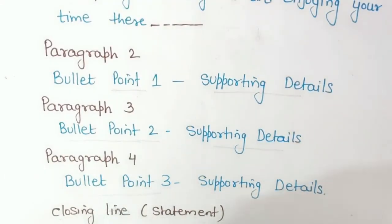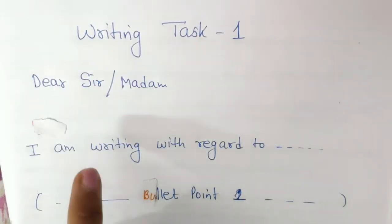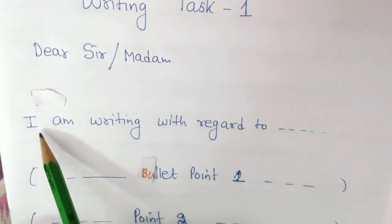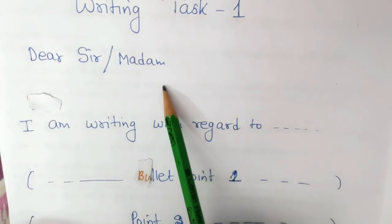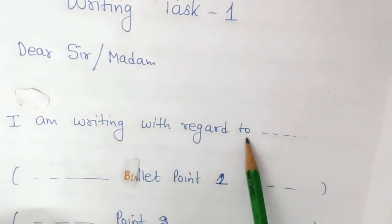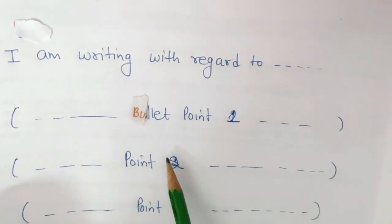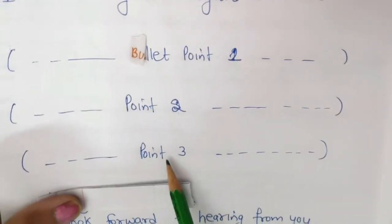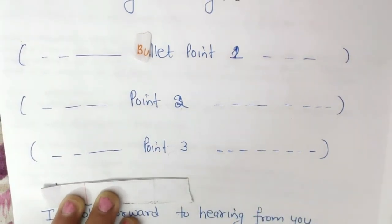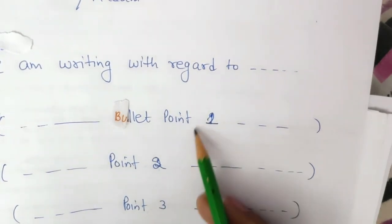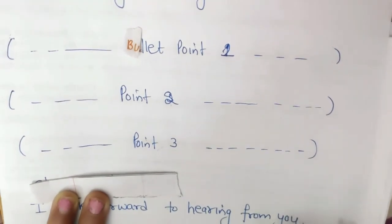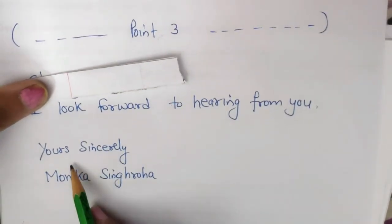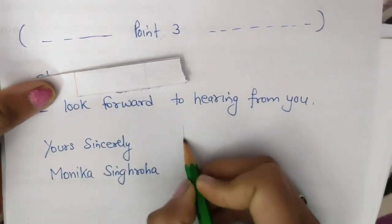Finally, here is the overall layout format for Writing Task 1 letter writing. Starting from the extreme left, write 'Dear Sir/Madam' — there is no subject line. Then your opening paragraph: 'I am writing with regard to...' Paragraph 2 covers bullet point 1, paragraph 3 covers bullet point 2, and paragraph 4 covers bullet point 3 — four paragraphs in total, each point in its own paragraph. Close with 'I look forward to hearing from you' and 'Yours sincerely, Monica Singroha.' Thank you for watching.